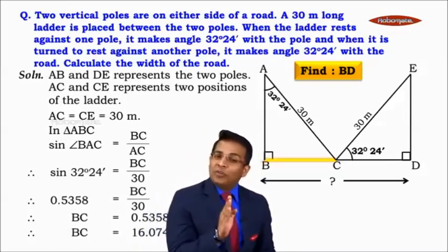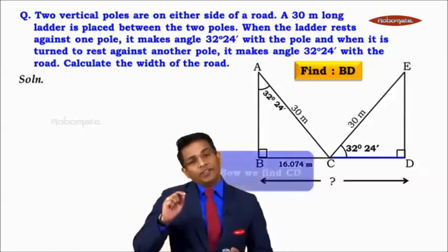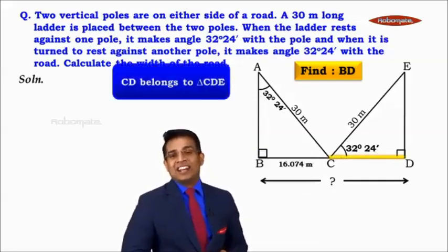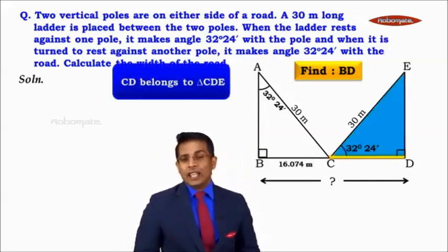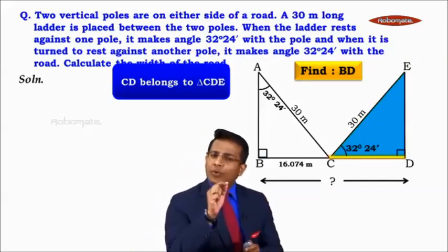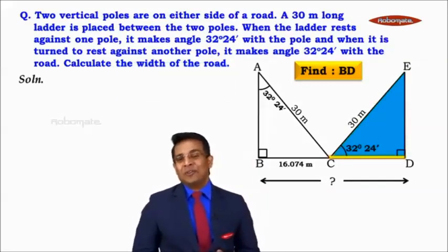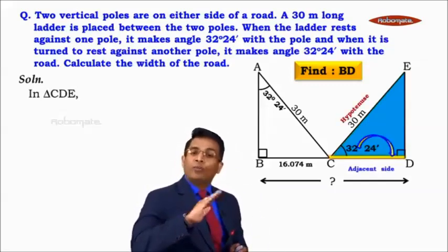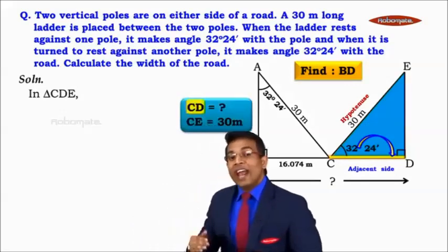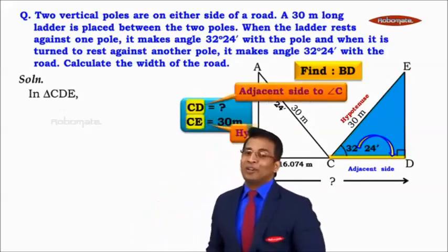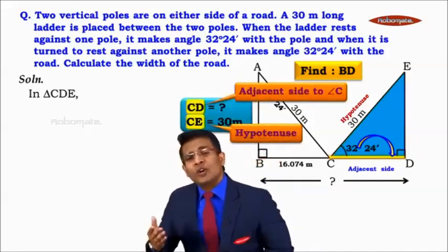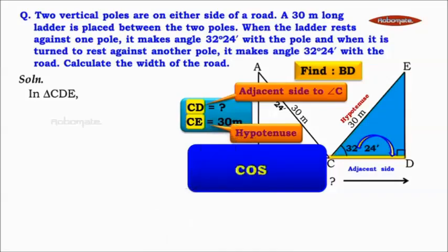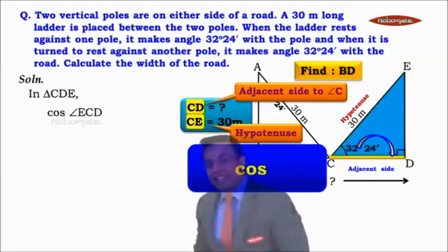Now we need to find CD. CD belongs to right-angle triangle CDE. In that triangle, the acute angle is 32 degrees 24 minutes. For that angle, CD is the adjacent side and CE is the hypotenuse. Since we're dealing with adjacent side and hypotenuse, the trigonometric ratio to use is cosine.